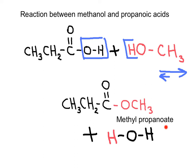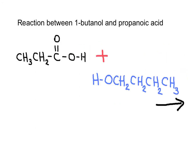And in this case, the ester product is methyl propanoate. This is a second example in the reaction of propanoic acid and 1-butanol.